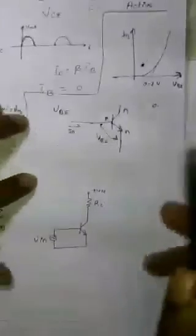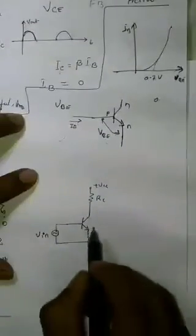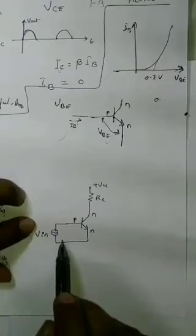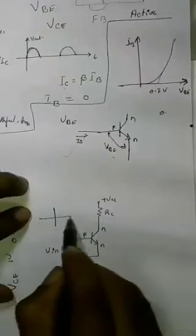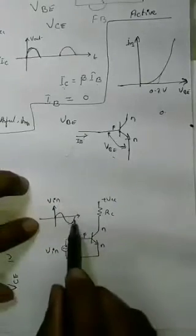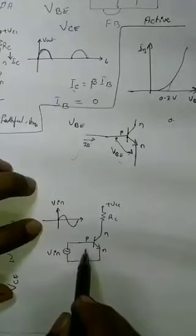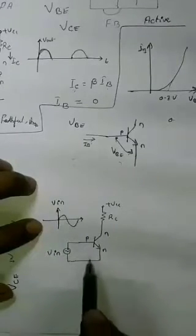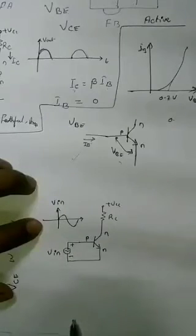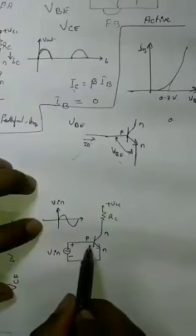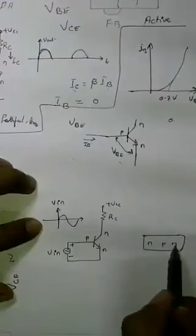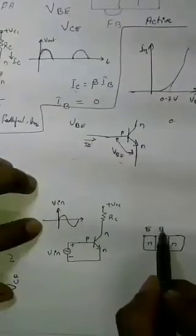Consider an NPN transistor circuit. We have an input sine wave applied to the transistor. The transistor has a base, collector, and emitter. During the positive half cycle, the positive terminal is connected to one side and the negative to the other.